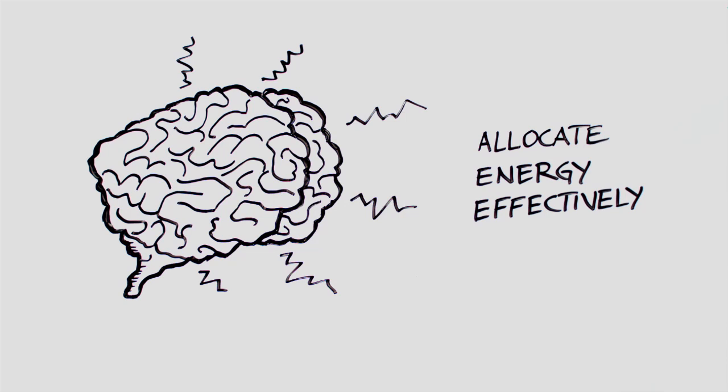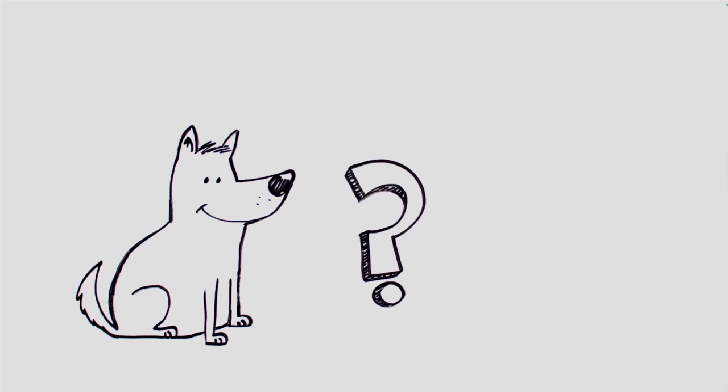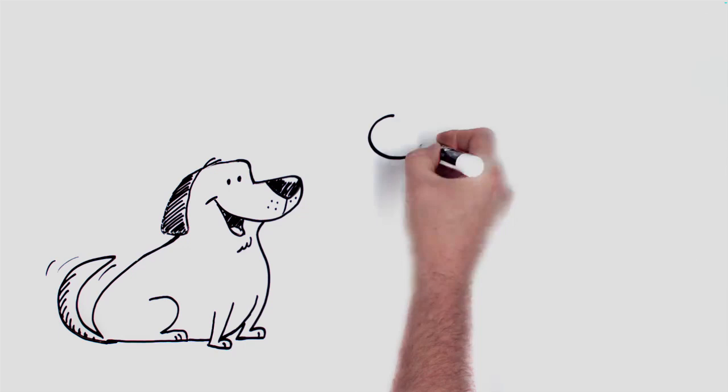But wait a minute. If willpower relies on a common biological process, is it necessary to have sophisticated mental machinery in order to show these depletion effects? Would animals show them? And would a boost of glucose restore them to their normal selves as it does with humans? My colleagues and I tested this possibility using dogs, two of which were my own golden retrievers.